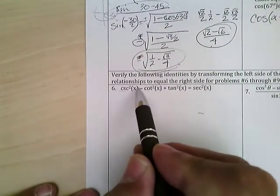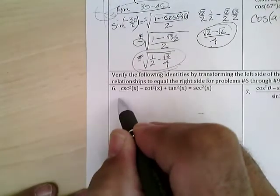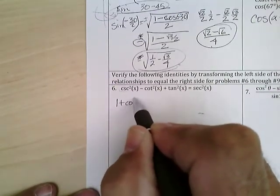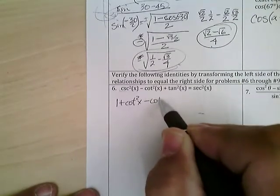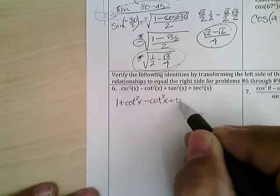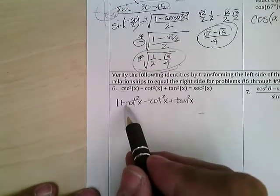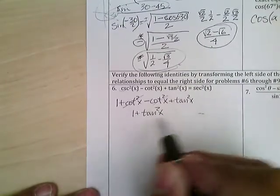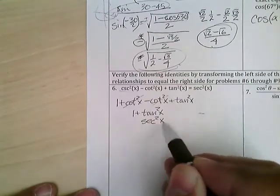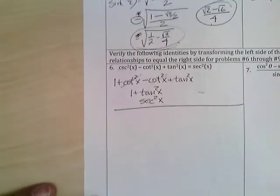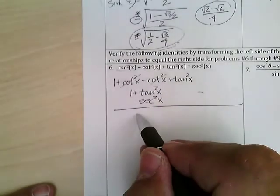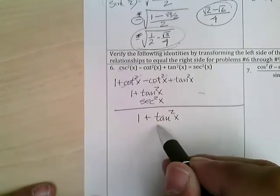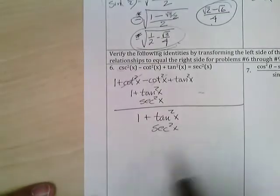Some people said csc²x = 1 + cot²x, so csc²x - cot²x + tan²x becomes 1 + cot²x - cot²x + tan²x — the cotangents cancel — giving 1 + tan²x = sec²x. Some recognized that csc²x - cot²x = 1 directly, giving 1 + tan²x = sec²x. Those were the simpler approaches.